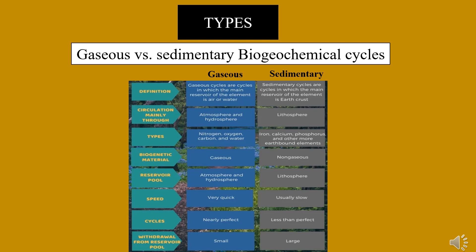The differences between gaseous and sedimentary cycles: in gaseous cycles, the biogenetic material is gaseous, while in sedimentary cycles it is non-gaseous. The reservoir pool in gaseous cycles is the atmosphere and hydrosphere, whereas in sedimentary cycles it is the lithosphere. The speed of gaseous cycles is very quick, whereas sedimentary cycles are usually slow. Gaseous cycles are nearly perfect, whereas sedimentary cycles are less than perfect.